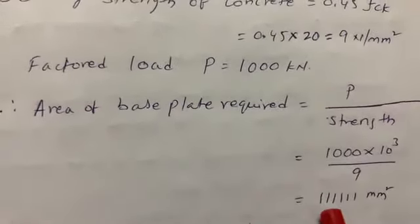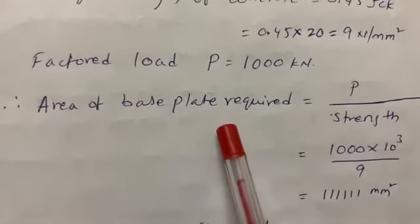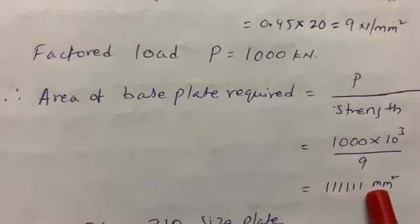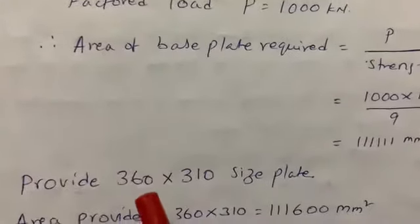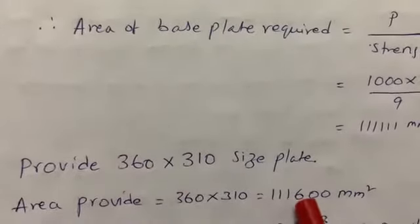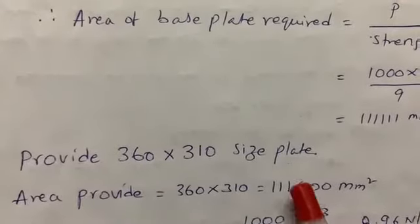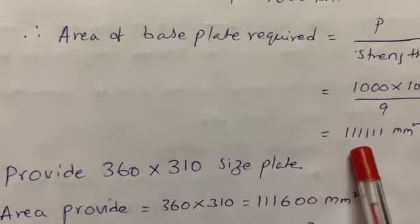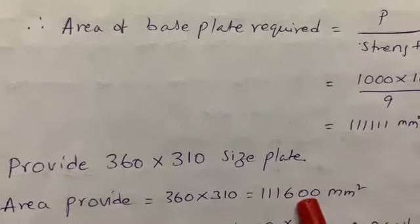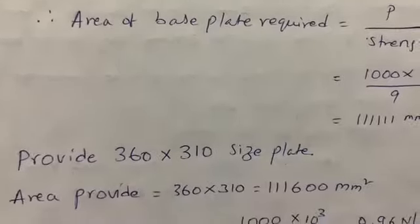The required base plate area is 111,111 mm². I am providing a plate size of 360 × 310 mm, which gives an area of 111,600 mm². The required area is 111,111 mm² and the provided area is 111,600 mm², so the 360 × 310 size plate is adequate.